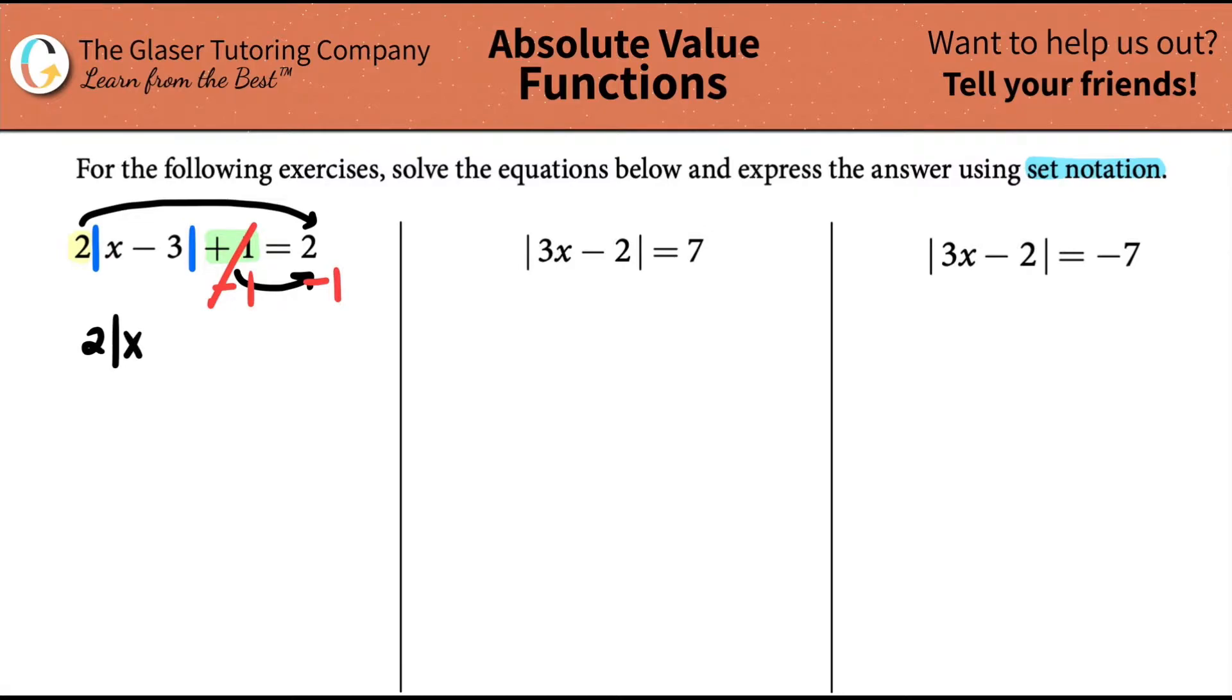So we're going to subtract 1. That will cancel out first. 2 times the absolute value of x minus 3 equals 2 minus 1 is just 1. Still, I want to get x by itself. However, it's still being trapped inside of this absolute value function. But there's still a 2 outside, which I can throw over to the other side.